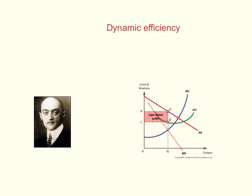This is an ongoing type of efficiency in creating new products. This economist here is Joseph Schumpeter, and he said firms that make large supernormal profits, so there are large profits above the cost of production, then they can afford to innovate.